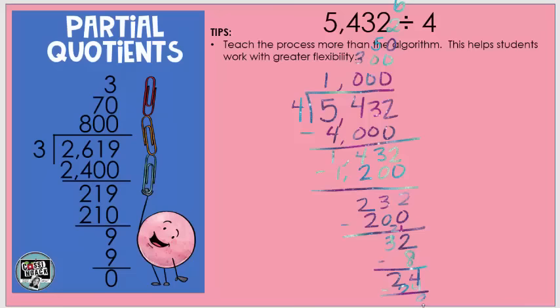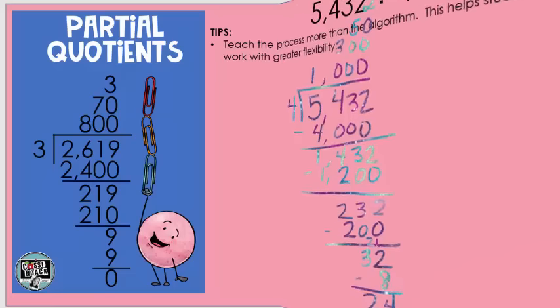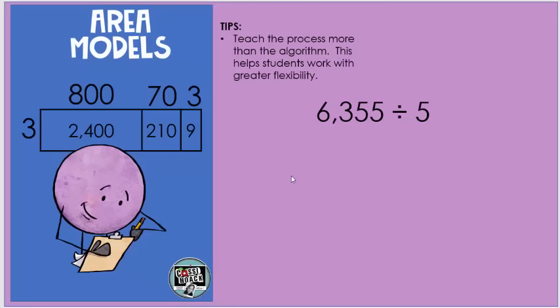And the last one we're going to look at is the area model strategy. This strategy, the area model strategy, is similar to the partial quotients—it just looks a little bit different. Instead of subtracting bit by bit off as you work through the partial quotient strategy, students are going to think ahead and get that set up right from the beginning. So we're going to solve six thousand three hundred fifty five divided by five. So the area model strategy requires students to break it into compatible numbers that will be the partial dividends.